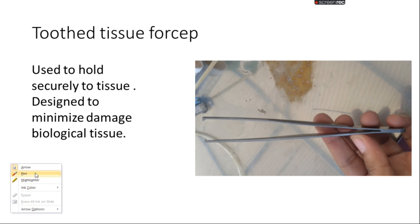Toothed tissue forceps are similar to tissue forceps but have pointed teeth. They are used to hold securely to tissues and are designed to minimize damage to biological tissue.